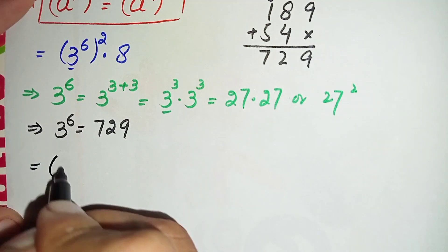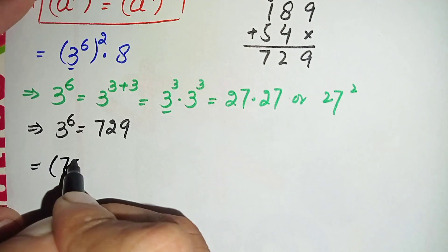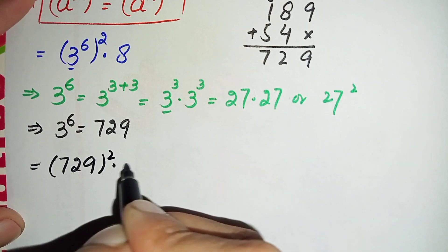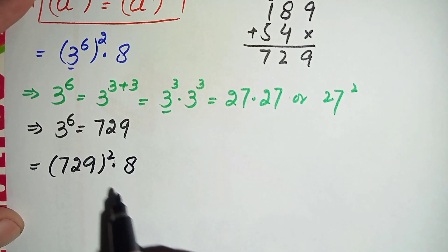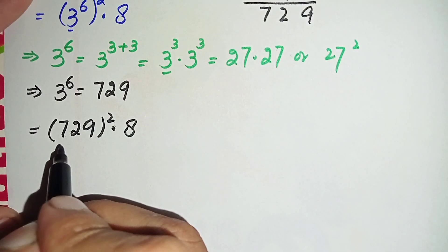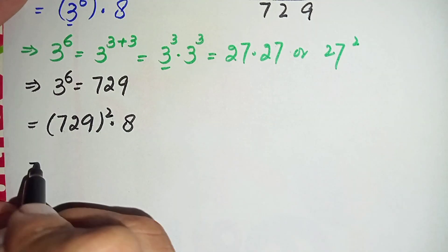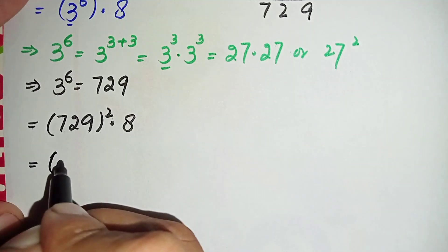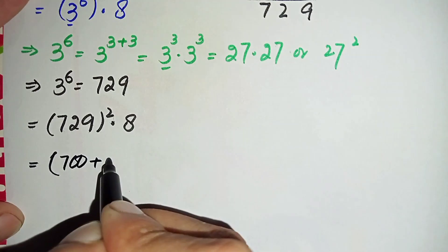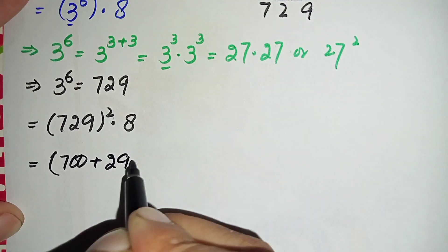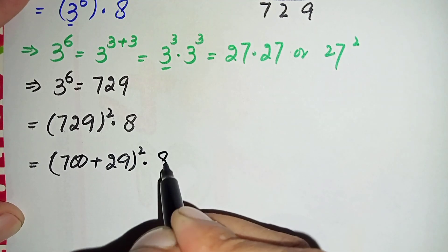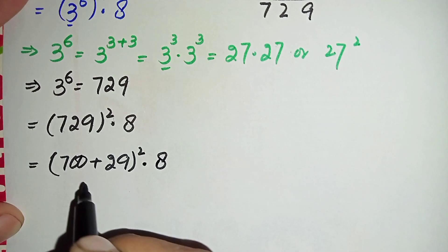So we replace 3 raised to power 6 with its value 729. This gives us 729 whole squared times 8. Next, we change 729 to the sum of 700 plus 29, so this becomes 700 plus 29, whole squared, times 8.